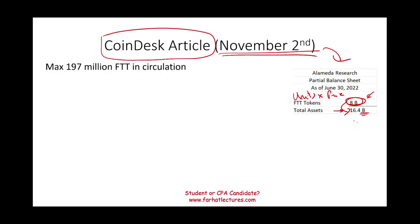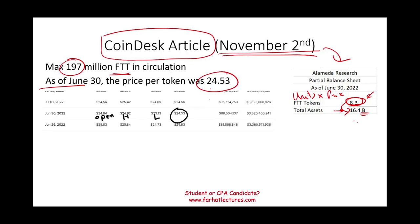That $8 billion figure was most likely fake. According to the FTX website, there were only 197 million FTT tokens in circulation. At the closing price of $24.53 on June 30th, even if Alameda held every single token in circulation, the maximum value would be approximately $4.8 billion — not $8 billion. This raised serious questions about mark-to-market accounting: what was the auditor thinking, and how did they arrive at $8 billion when it simply did not exist?